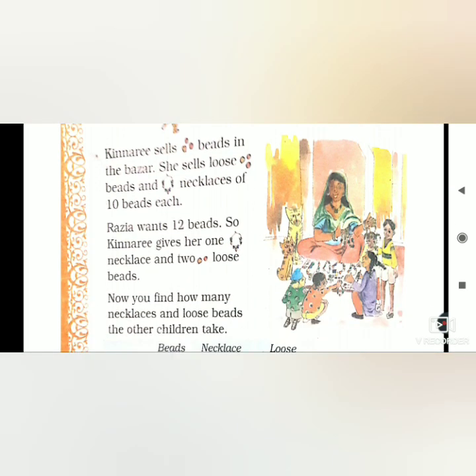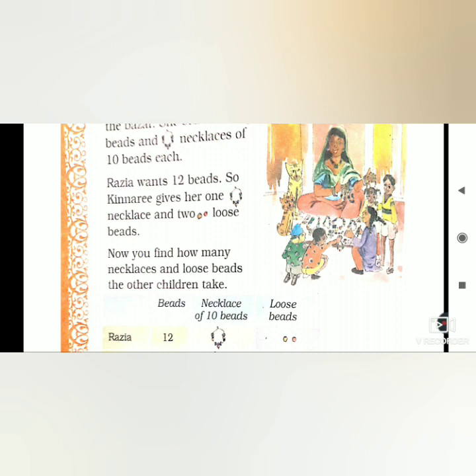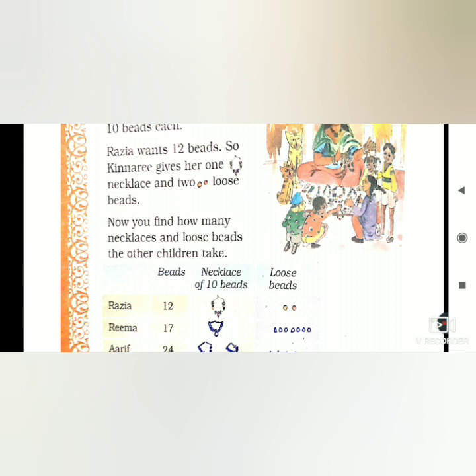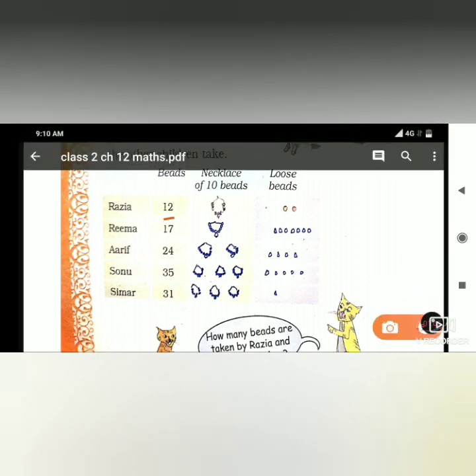Raziya has 12 beads, so she has 1 necklace and 2 loose beads. 10 beads have been made into a necklace and the rest are loose. Now you find how many necklaces and loose beads the other children have.